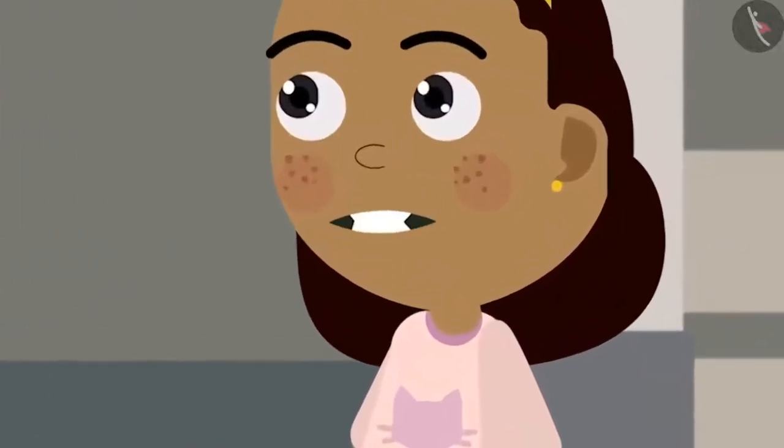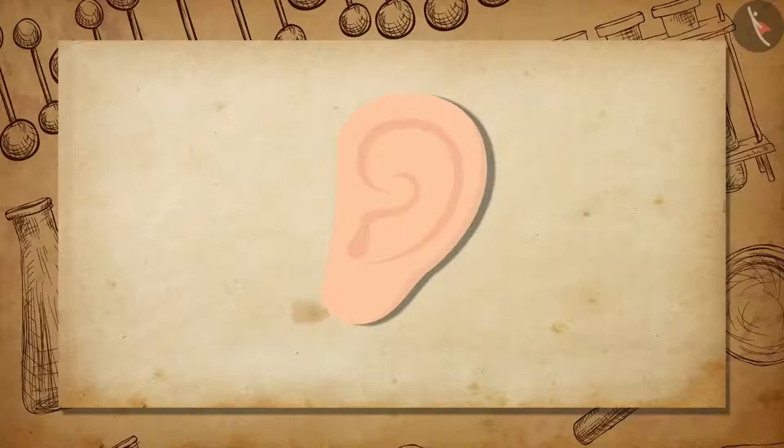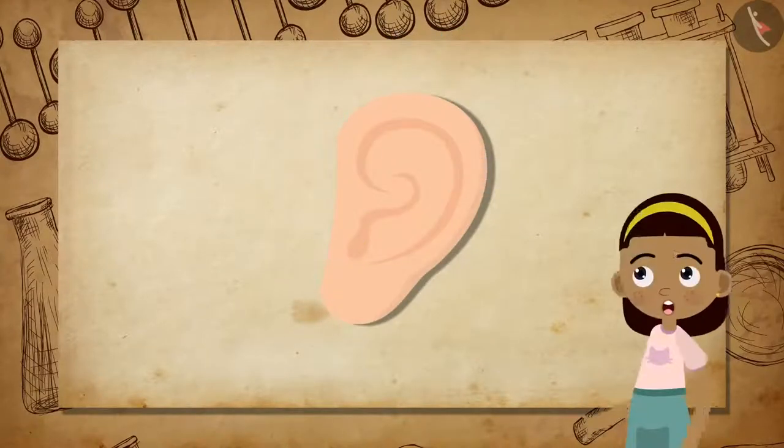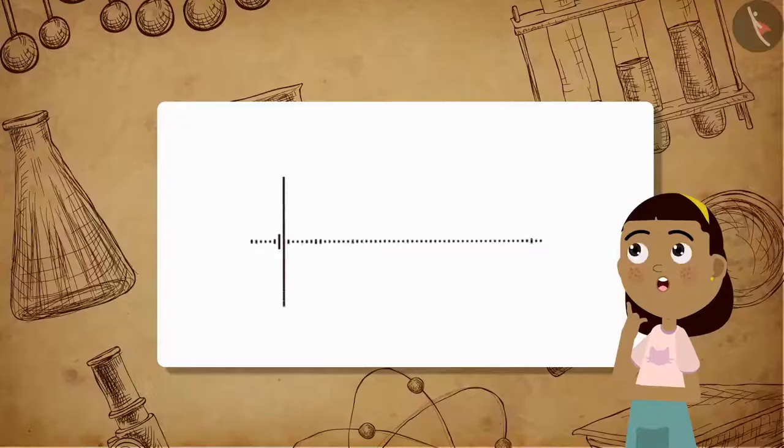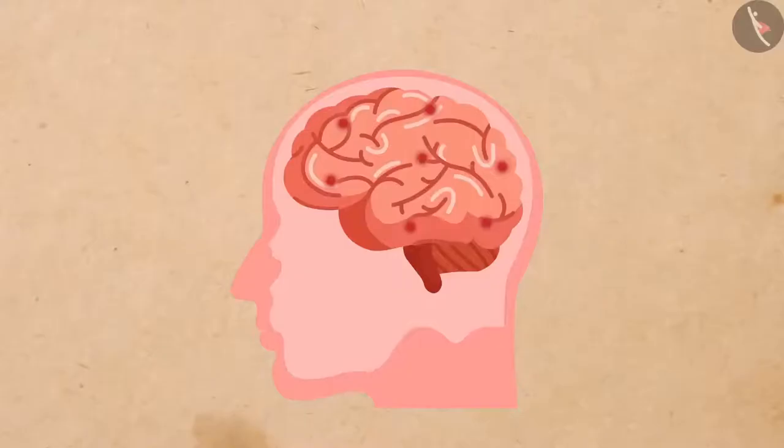Humans hear sound with the help of an extremely sensitive device, the ear. The human ear allows us to convert pressure variations with audible frequencies to electrical signals. These signals travel to the brain through the auditory nerve.